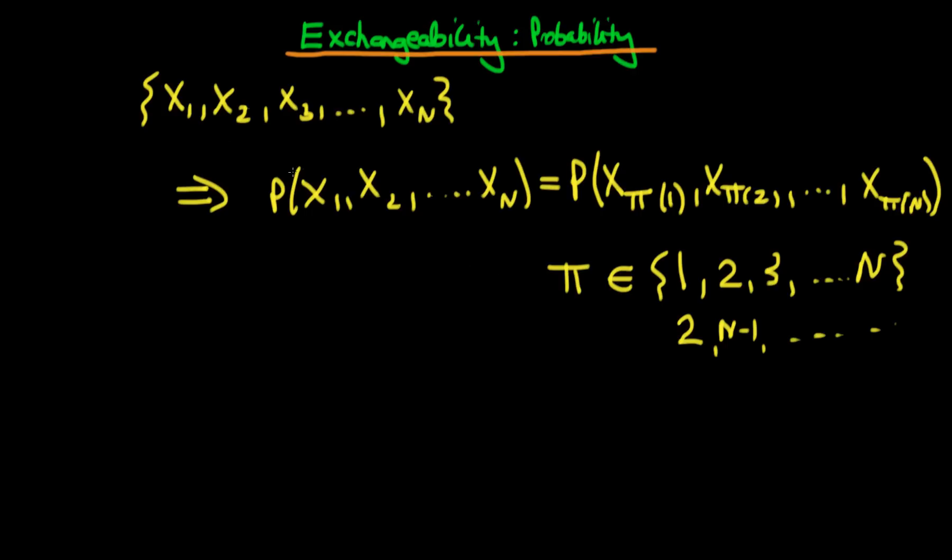So these quantities x1 through to xn are what we call exchangeable if and only if we can write down the same joint probability of any permuted sequence of those random variables. That's the mathematical definition.